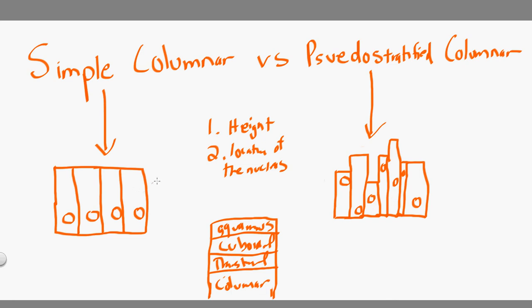So the two differences are the height of the columnar cells and the location of the nucleus. That's how you can tell, for example when looking at these under a microscope, whether you're looking at a simple columnar or a pseudo-stratified columnar — you look at the height and the location of the nucleus.